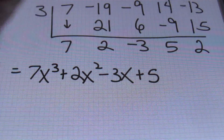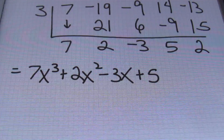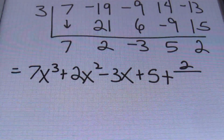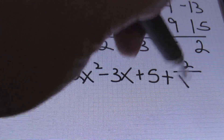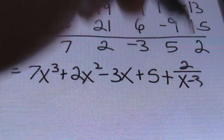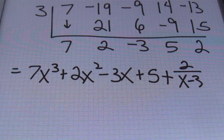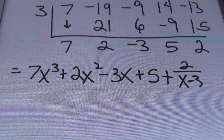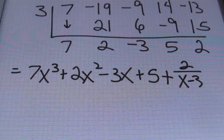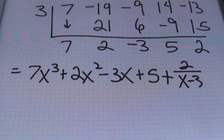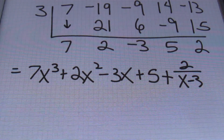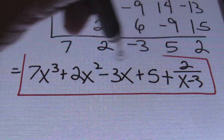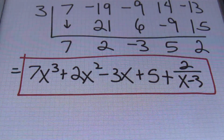Remember that our highest exponent was originally 4, so my answer's first term will be x to the third power. My solution will be 7x cubed plus 2x squared minus 3x plus 5. Then with your remainder, which is that value of 2, I'll have plus 2 over the original divisor, which is x minus 3. So the full answer is 7x cubed plus 2x squared minus 3x plus 5 plus 2 over x minus 3.